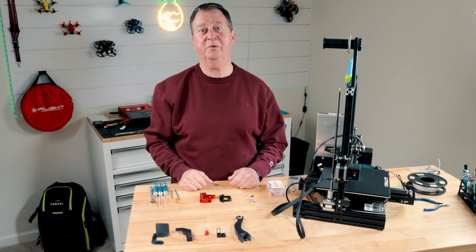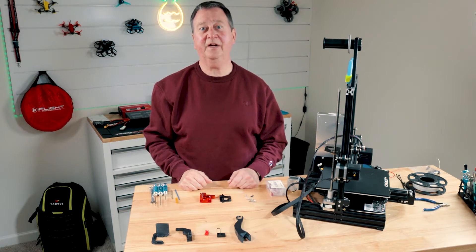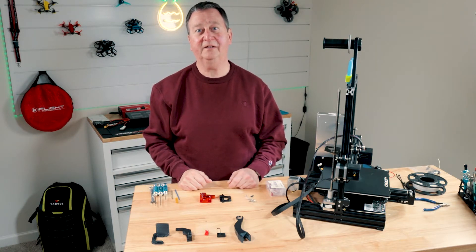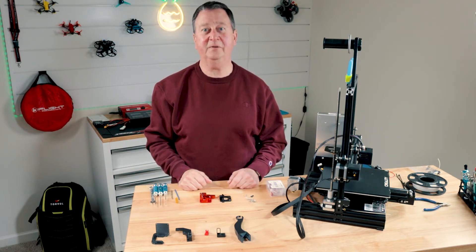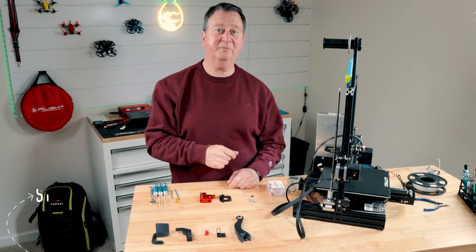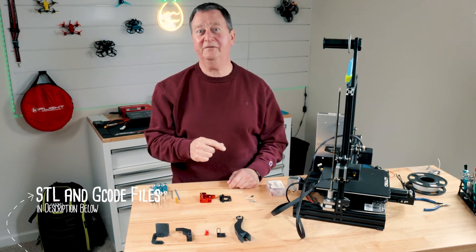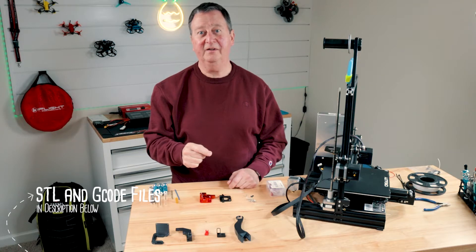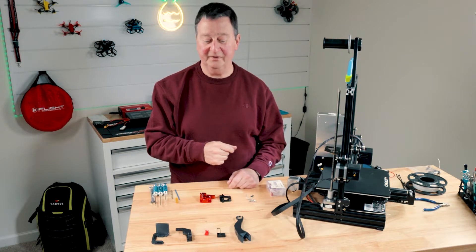Before you take your Ender 3 printer apart, you need to print five different parts out of PLA to get your printer ready to print TPU. In the description box below, there's going to be an STL file for each individual part, as well as the G-code to print it on your Ender 3 printer.